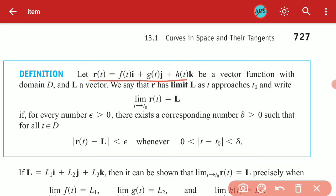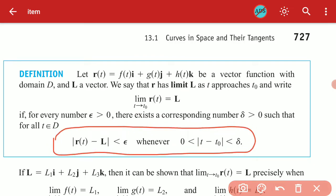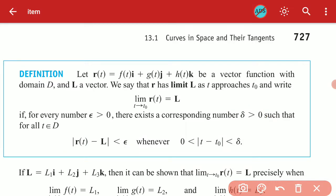Now for the definition of the limit. As with real-valued functions, limits apply to vector-valued functions too. We say that r has a limit L as T approaches T-naught. Using the epsilon-delta definition: for every epsilon, there exists a delta such that the distance between r(t) and L is less than epsilon whenever the distance between t and T-naught is less than delta and greater than zero.